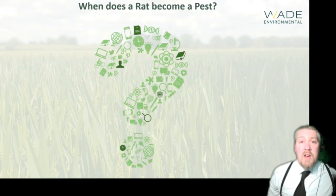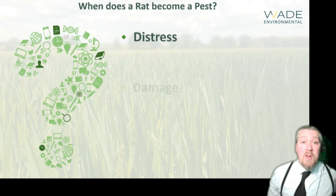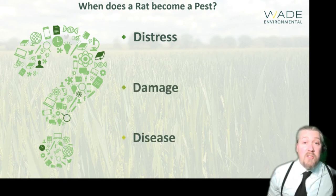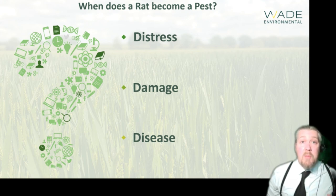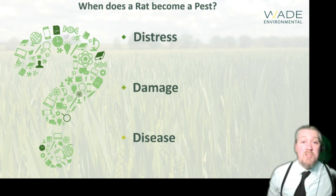When does a rat become a pest? Well, a rat becomes a pest when it starts to do one of three things: it causes distress, it can cause damage, or it can spread disease. Distress is fairly easy to rationalise — rats and other arthropod pests can cause psychological distress simply by being there, by infesting people's premises. Damage is quite easy to visualise: damage to structures, electrical wiring, or damage to food or stored products. Disease is one we probably consider less often, but there are a host of diseases associated with rodents that have the capacity to hurt us and the animals we look after.